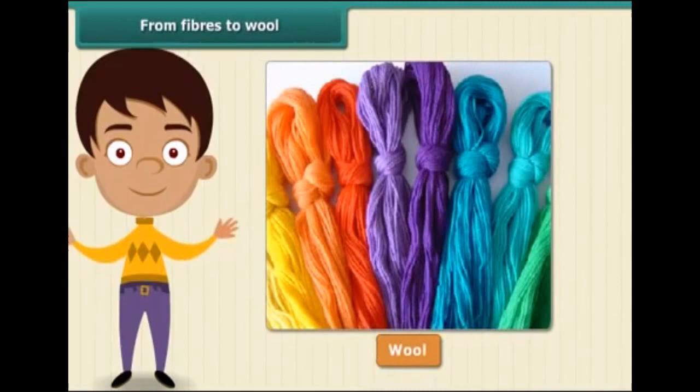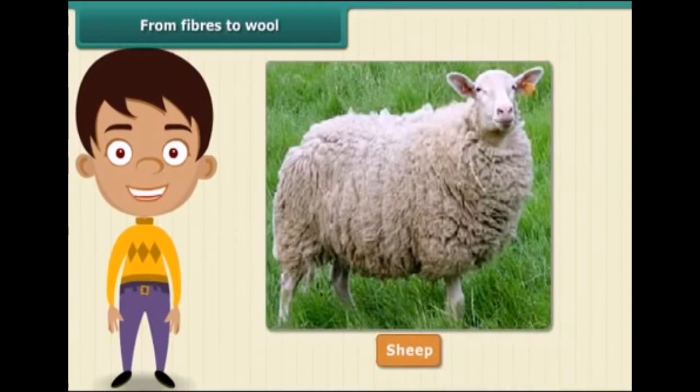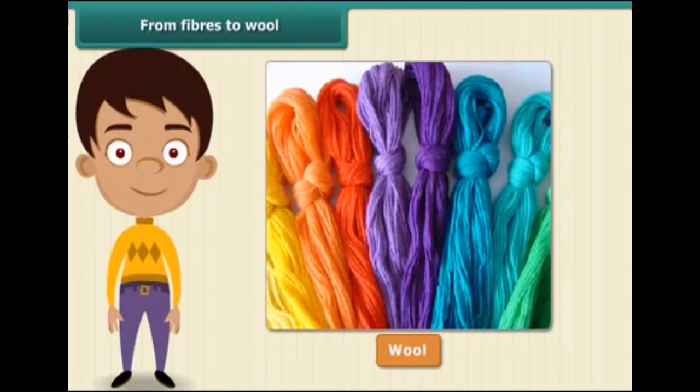For the wool to be of good quality, sheep need to be fed a nutritious diet. Apart from what they get from grazing, they are fed a mixture of pulses, corn, and jowar. The sheep so reared develop a thick growth of hair, known as the fleece of the sheep, which provides us wool.